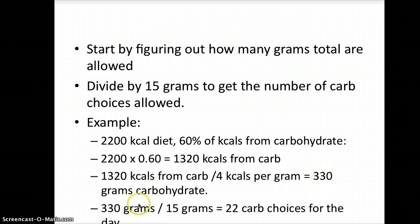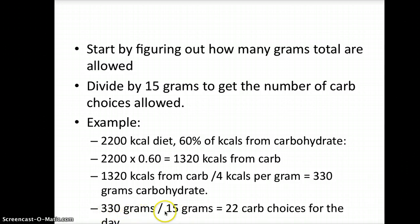Lastly, we're going to divide by 15 grams per carb choice. So, 330 grams of carbohydrate total divided by 15 grams equals 22 carb choices for the day.